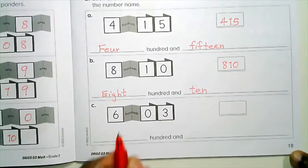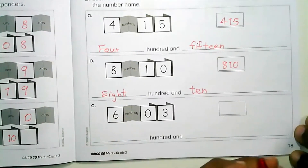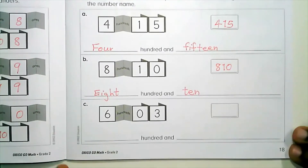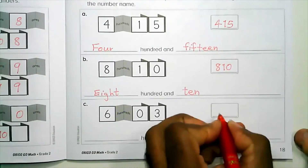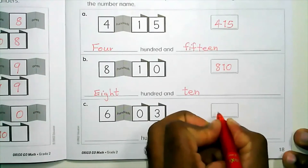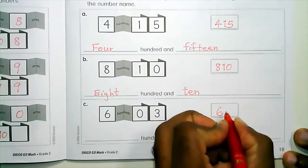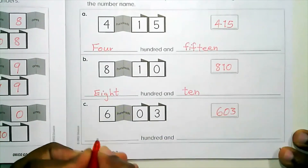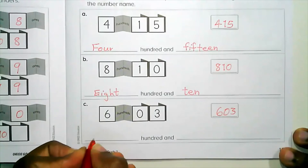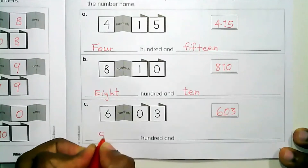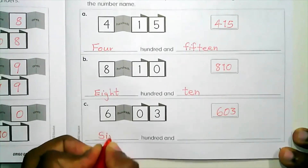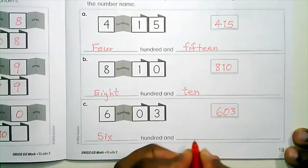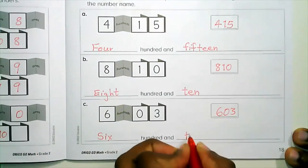Part C: six hundred and three. We write the matching number as six hundred and three, and in words we have six hundred and three.